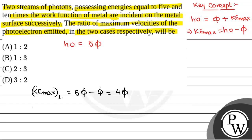And in the second case, we have h nu equal to 10 times work function. So KEmax2 that will be equal to 10φ minus φ, that is 9φ.